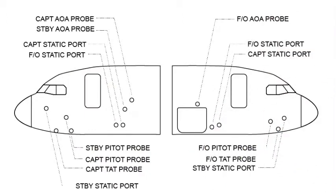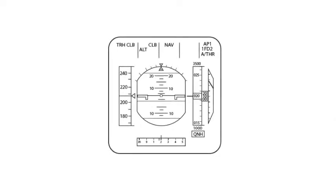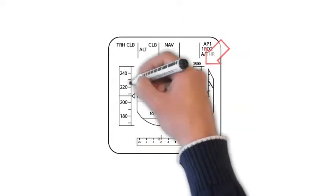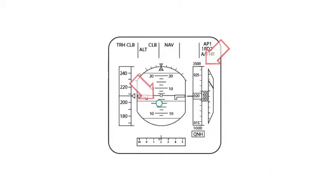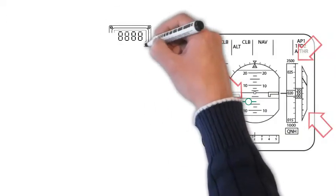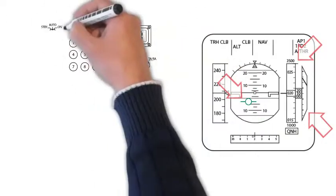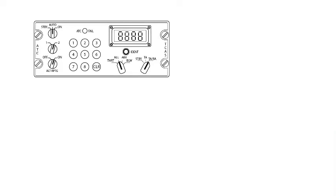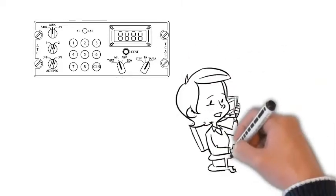Depending on how the probe or probes is obstructed, the effects on cockpit indications differ. In a situation where the barometric altitude is also unreliable, the flight path vector (FPV) and the vertical speed (VS) are affected. In addition, the ATC transponder may transmit an incorrect altitude to ATC or to other aircraft, which can lead to confusion. Therefore, the flight crew should advise ATC of the situation without delay.